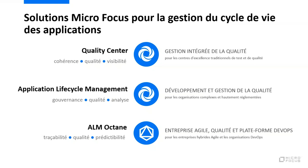Le dernier né, c'est ALM Octane. Dans le paysage des outils de gestion du cycle de vie d'application, c'est celui qui va nous permettre de vraiment gérer la partie projet agile. Quality Center et ALM, de par leur origine, ont été plutôt orientés gestion du cycle de vie traditionnel — cycle en V, waterfall comme disent les anglo-saxons.